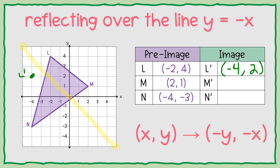Okay, for M, to find M prime, switch places and change their signs. So it's going to be at the point negative 1, negative 2.